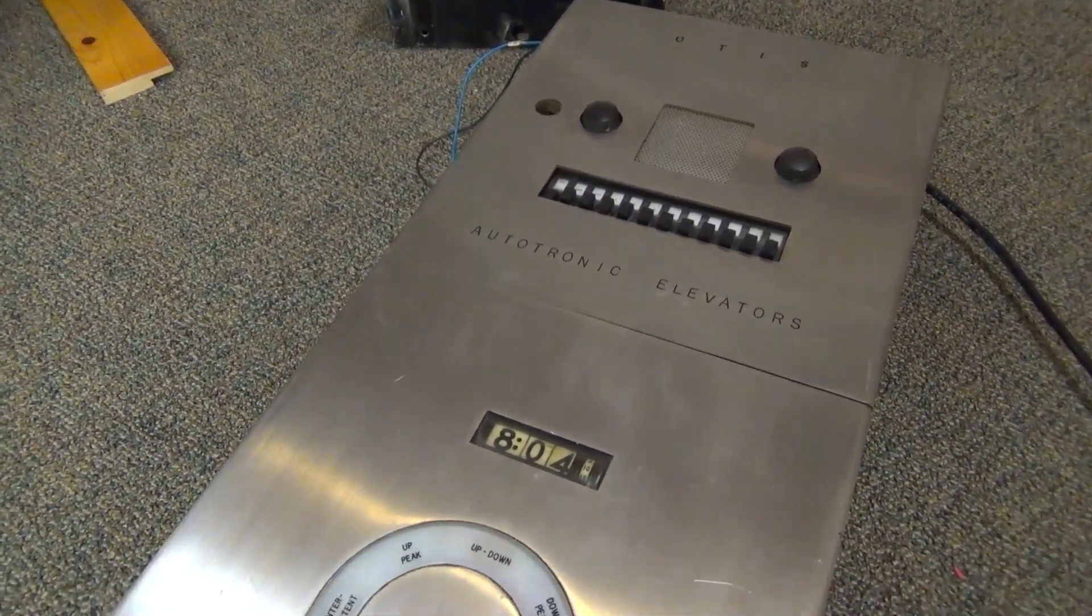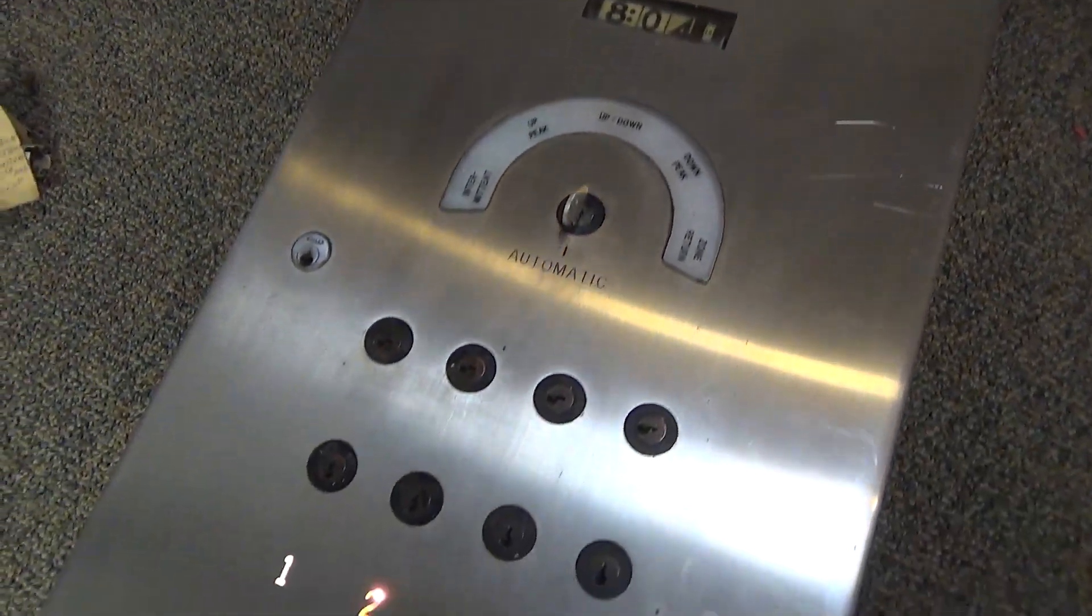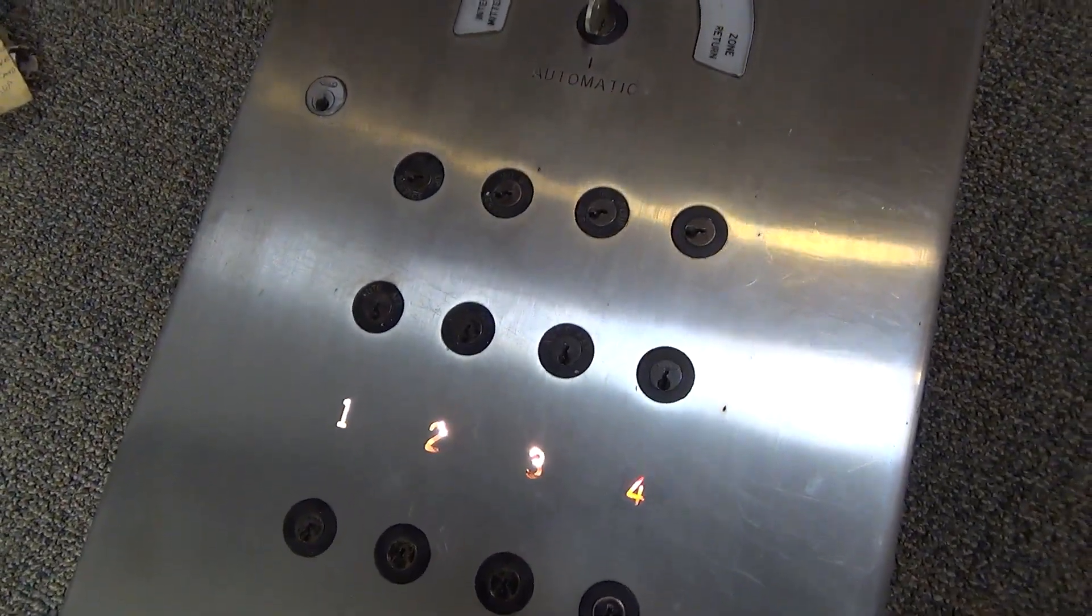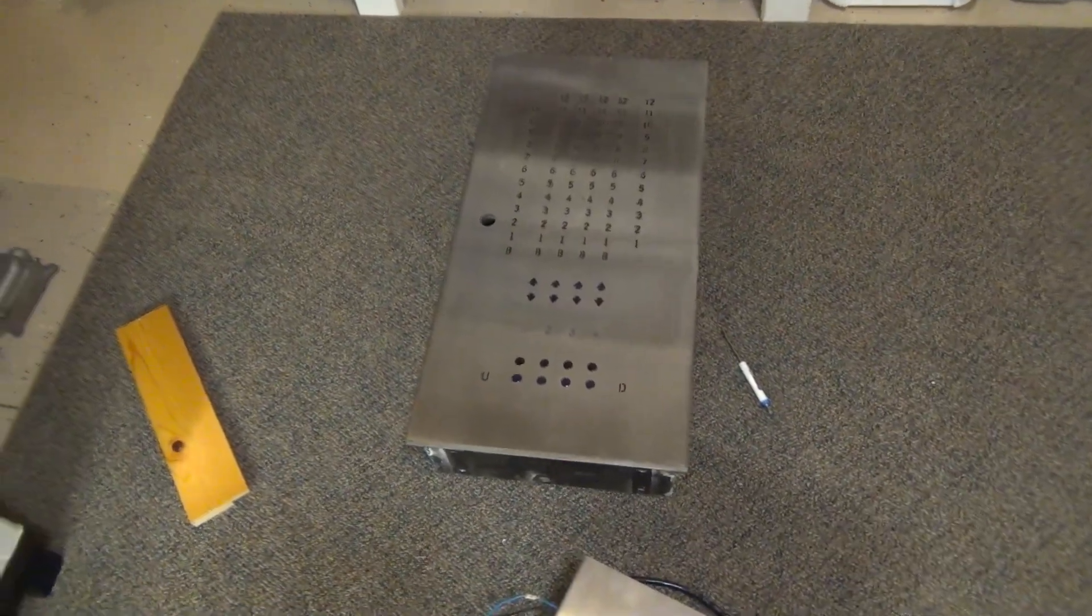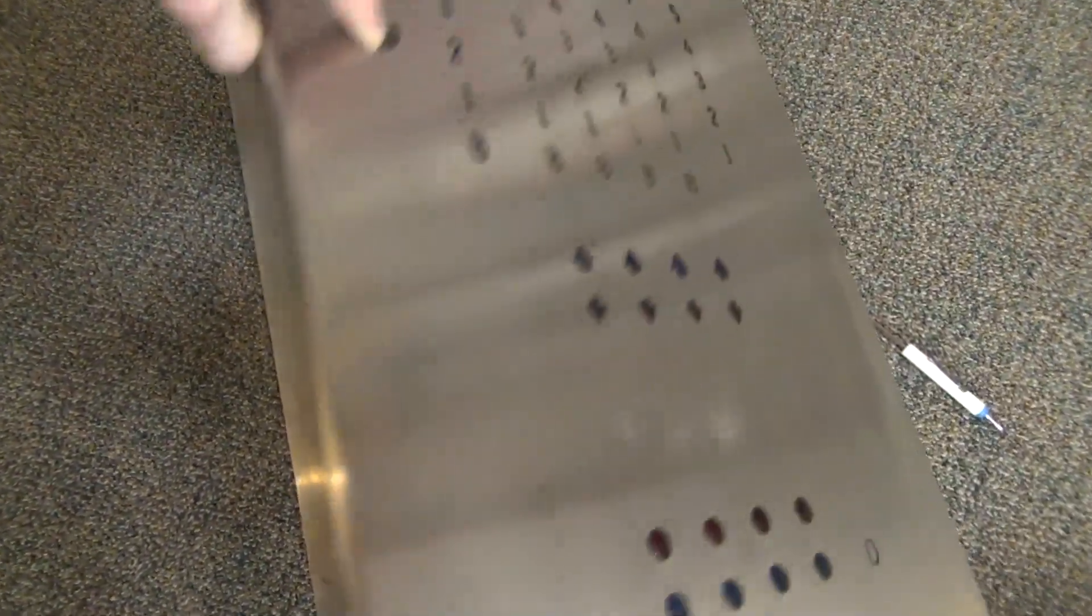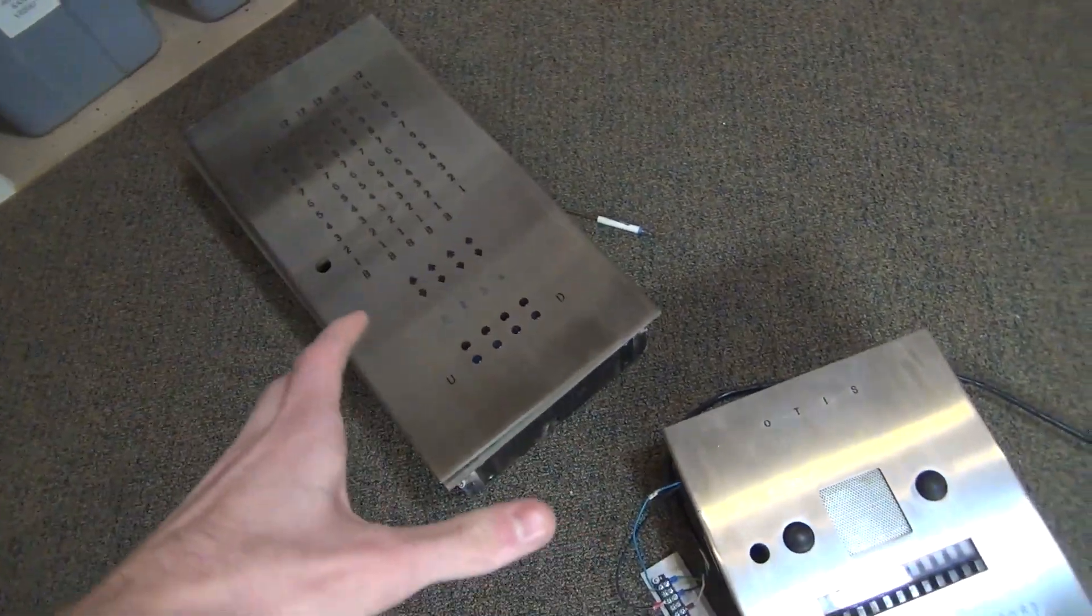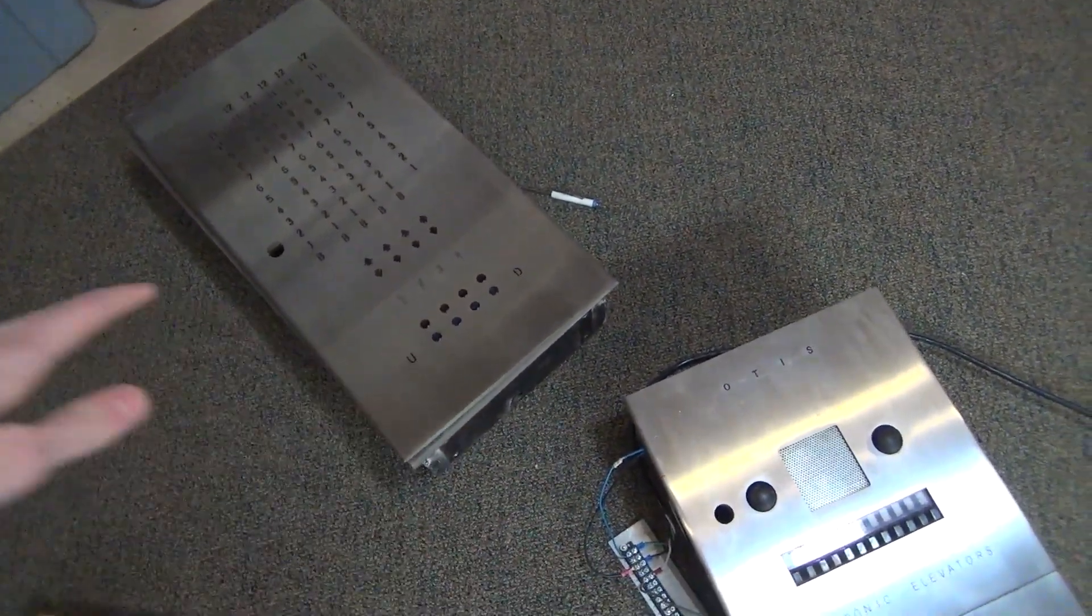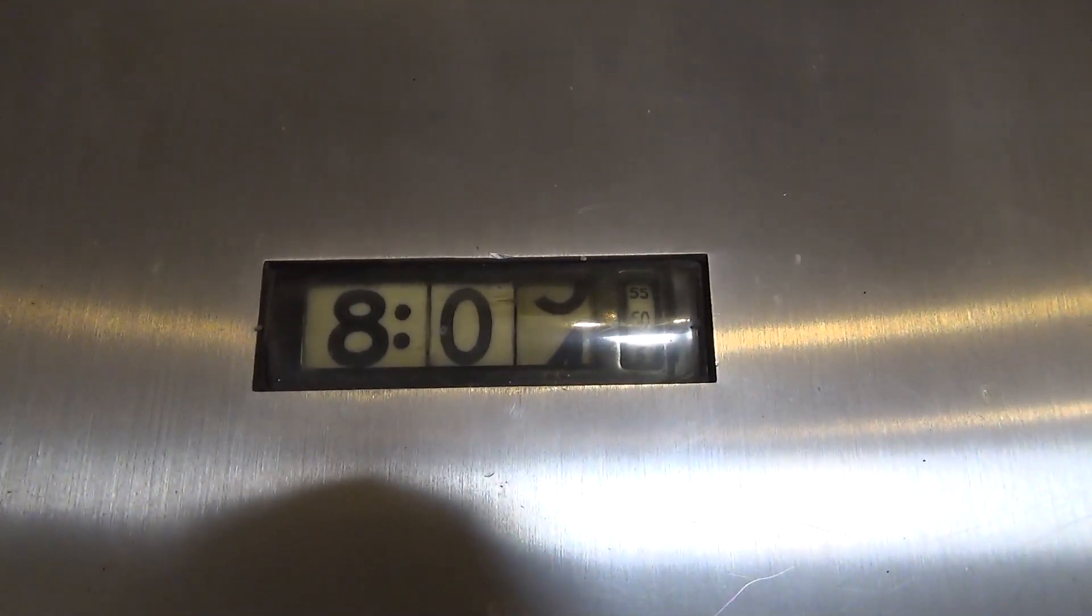So that's going to be it for this first project video on this Otis Autotronic panel. I definitely think there is a good start and a lot of potential for this thing. On the next video we're going to be starting wiring this beast. There is a lot of stuff to consider for this. I'm going to have to wire up this entire panel and also design a controller system so that we can control the numbers. So we will see you in the next project video.